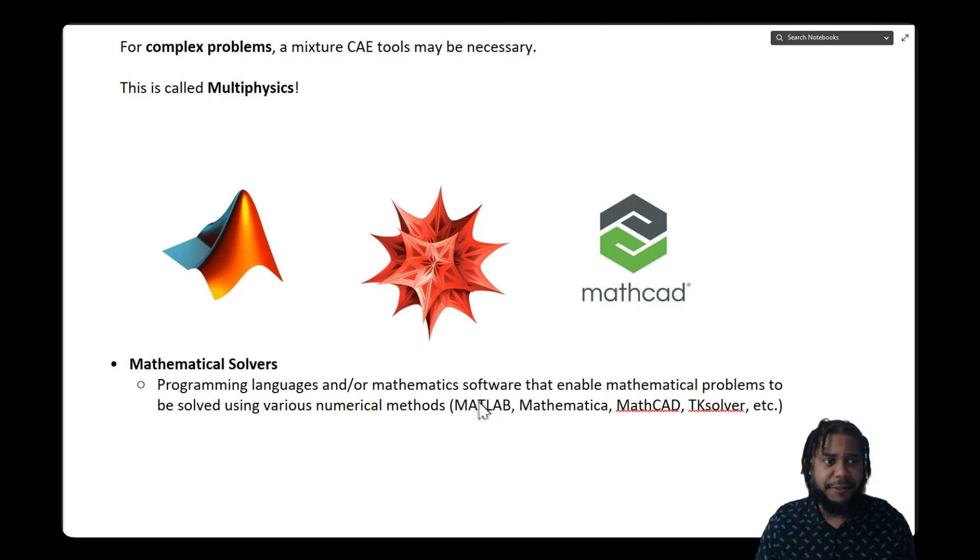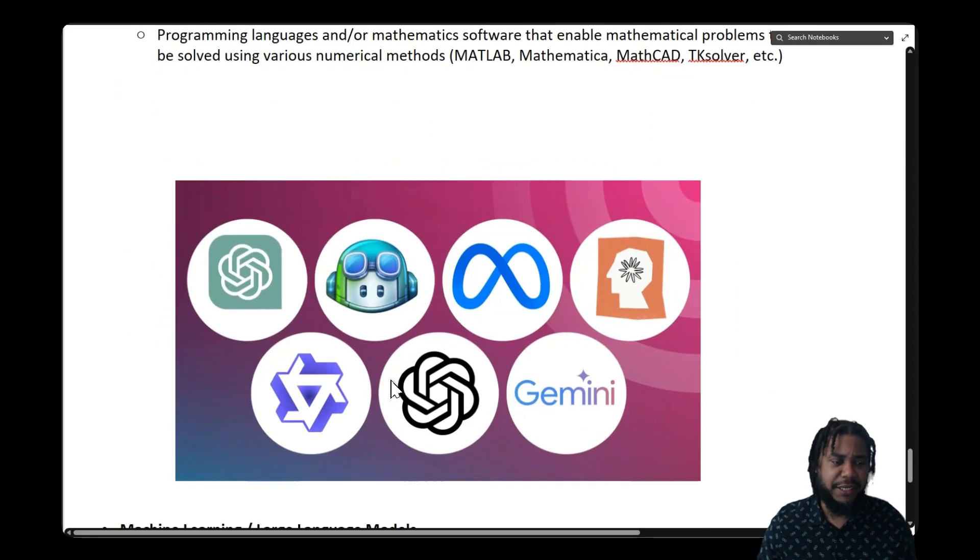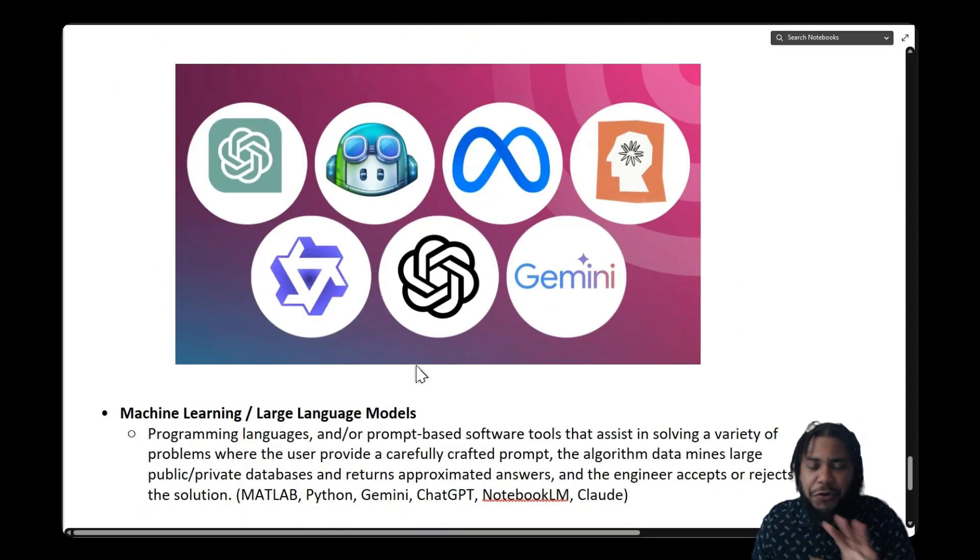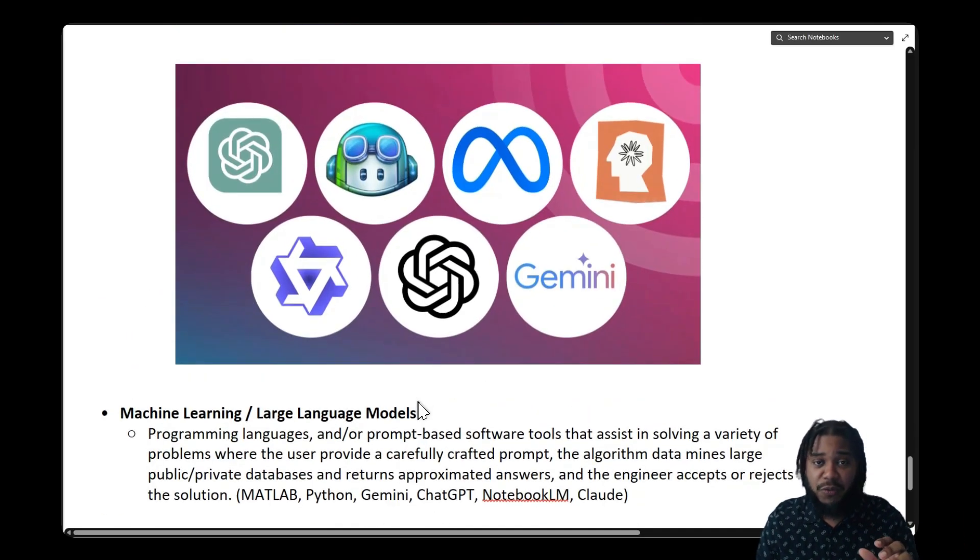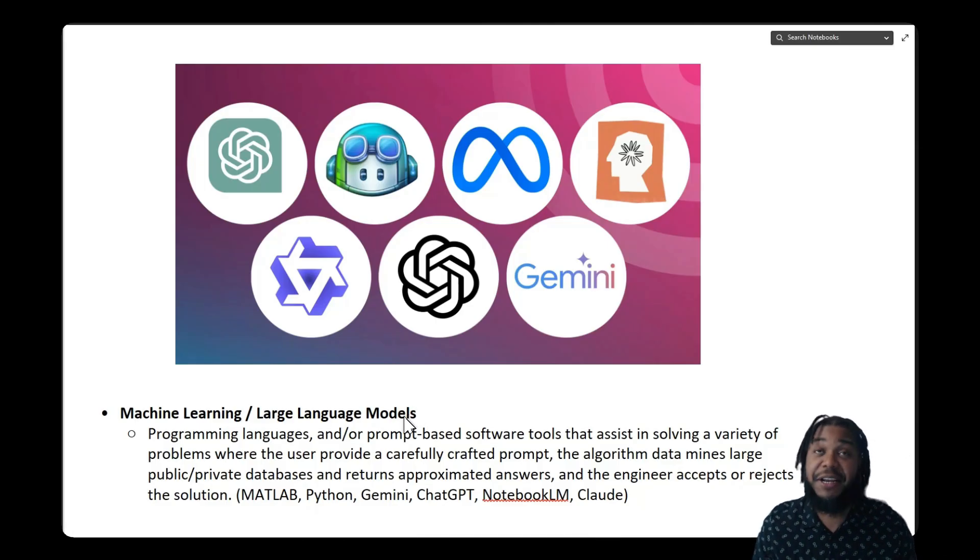Finally, there's one more tool, probably the newest tool, the tool that you're most excited to use, and those tools are what we call machine learning based, and specifically, secondarily, large language models. These are programming languages or prompt-based tools that can assist us in solving a variety of mathematical problems. When we as a user carefully craft the right prompt or we write code and provide the right input training data, these algorithms are able to help return approximate answers to engineering problems that we pose to these tools.